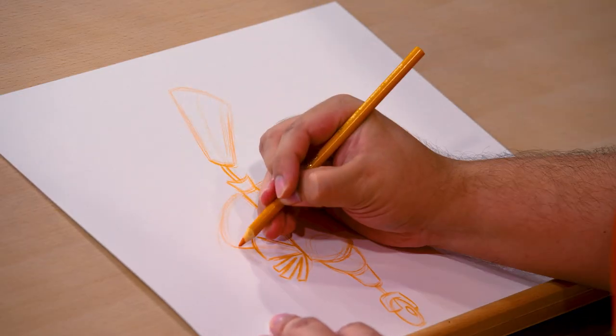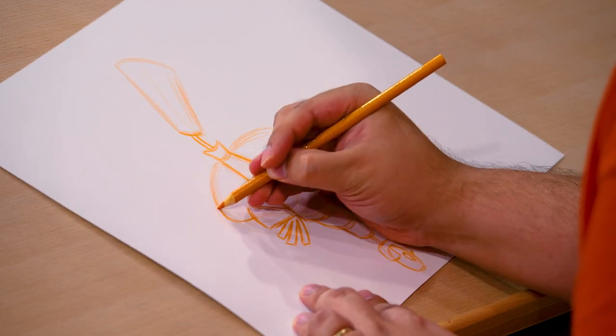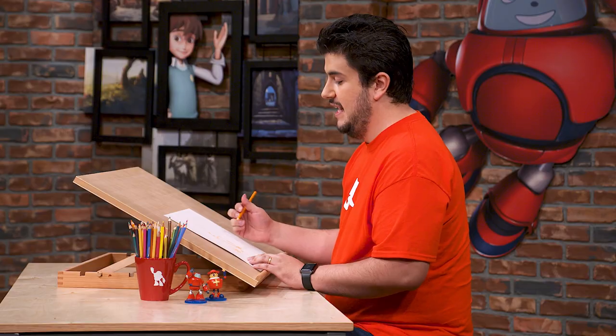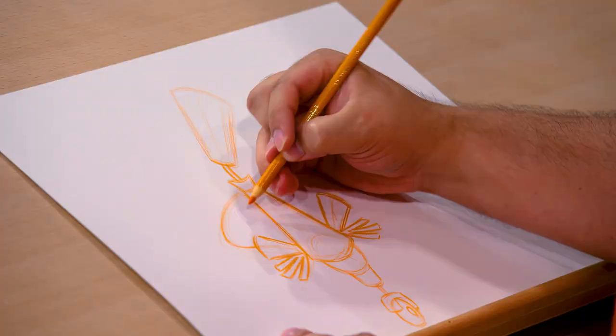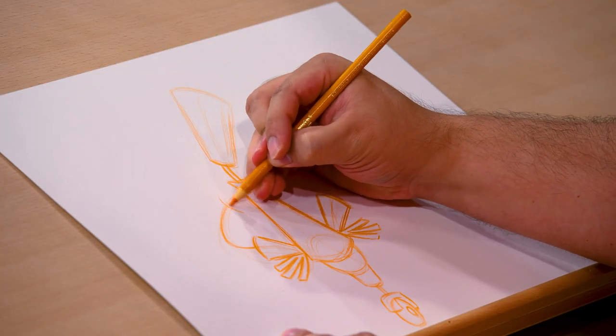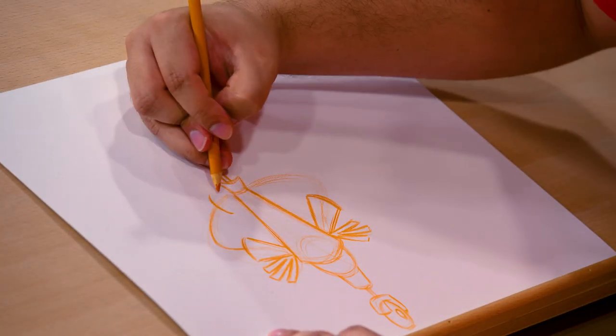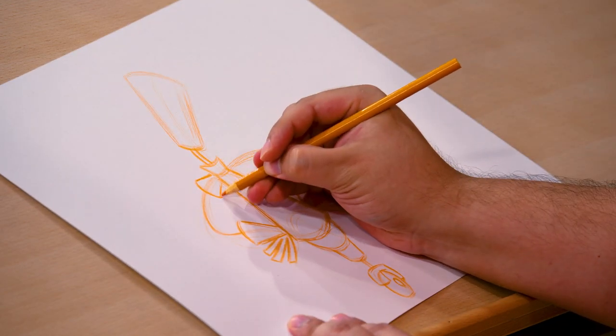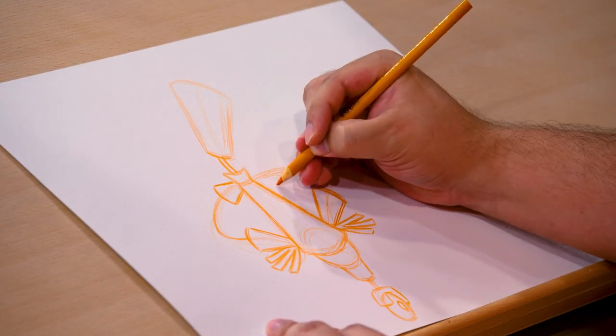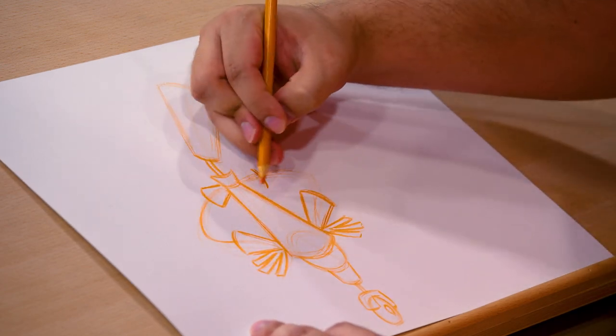For the arms, we'll just kind of start to darken in this line. Oh, but I forgot he has sleeves at his shoulders. So we're gonna go ahead and put those in. It's kind of like a short sleeve shirt. Again, another curved line coming into triangle here. We'll do the same thing on this side.